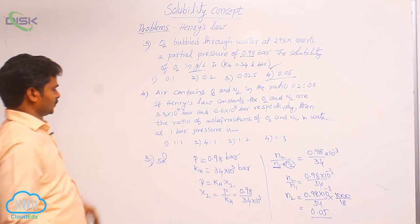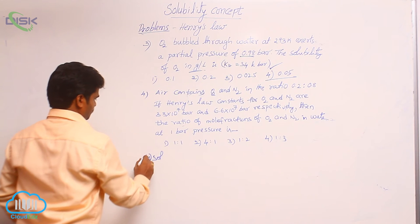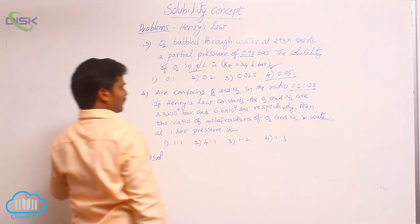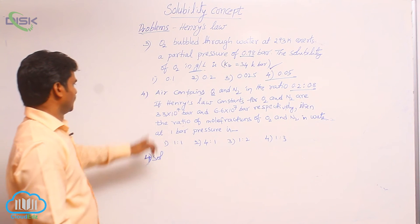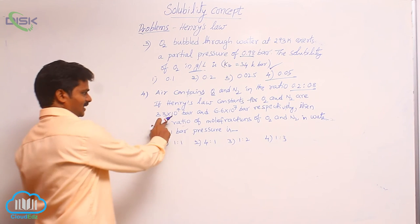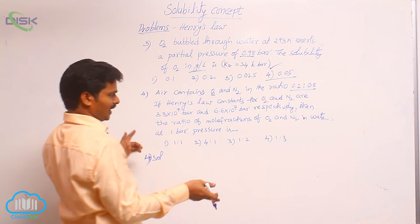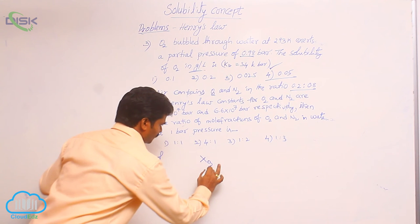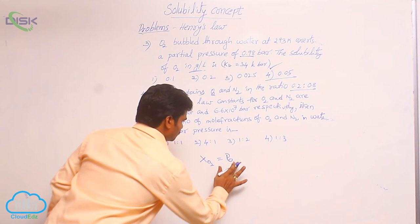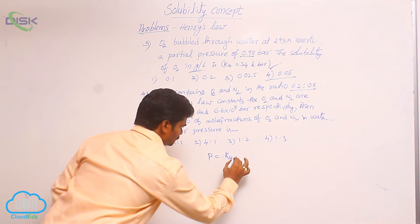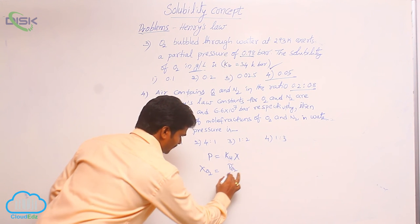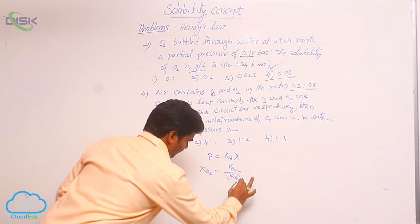Now the solution for the fourth question. In this case, air contains O2 and N2 in the ratio 0.2 to 0.8 — these are the mole fractions of both gases in air. Henry's law constants for O2 and N2 are 3.3 into 10 power 7 and 6.6 into 10 power 7 respectively. The ratio of mole fractions of O2 and N2 is to be found. Using the same formula, mole fraction of O2 equals partial pressure of O2 divided by its Henry's law constant.